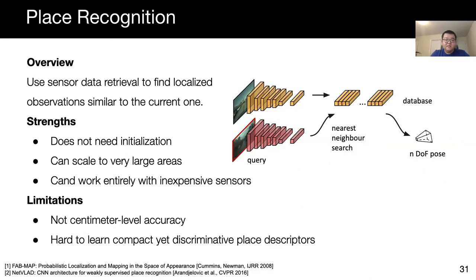Place recognition tackles localization through retrieval. In this method, we try to recognize a place that has been seen before by matching the current observation to a database of pre-localized observations. The advantage is that it doesn't require any initialization and can scale to very large areas when we need to recover from localization failures. Moreover, advances in large-scale retrieval are directly applicable to this problem, making it easy to scale. Unfortunately, these methods do not achieve centimeter-level accuracy yet and are limited by the density of the used database. More generally, it can be hard to learn place descriptors that are both compact and discriminative.